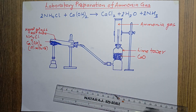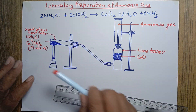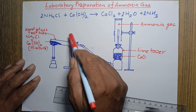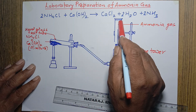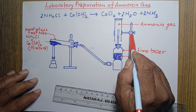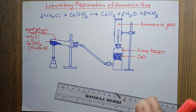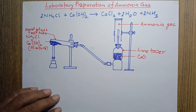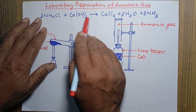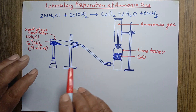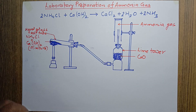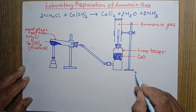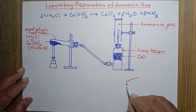I have written all the important labels. You can also write Bunsen burner, delivery tube, clamp stand, gas jar, and clamp stand. This way we can draw the diagram representing the laboratory preparation of ammonia gas. This is the chemical reaction that takes place and these are the chemical substances used in the preparation of ammonia gas in the laboratory.